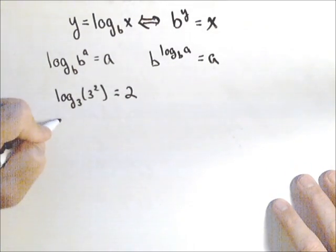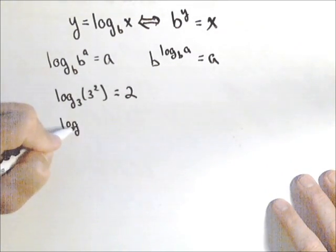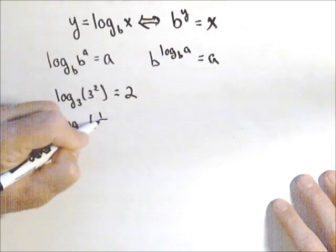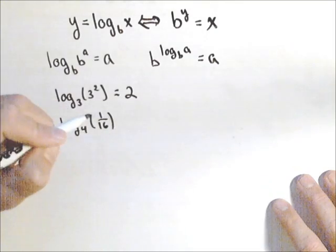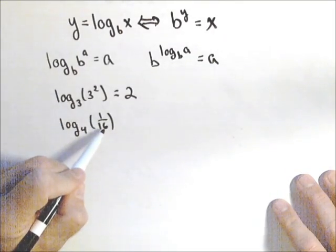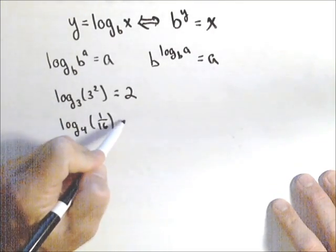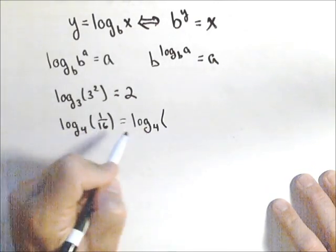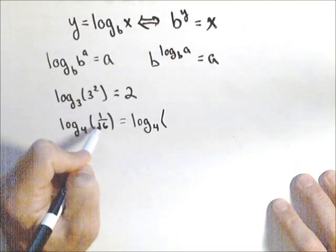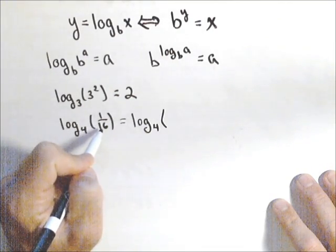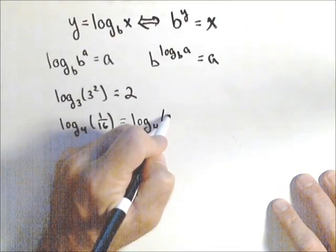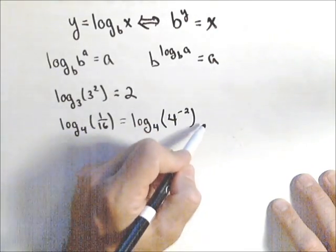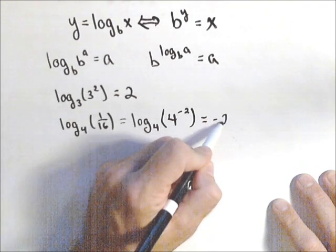We'll do a few more here just to get used to this. So log base four of one over 16. Now we don't have the bases the same, but we can write one sixteenth as a base four. So log base four, one sixteenth, well, 16 is four squared. Because it's in a denominator, we're gonna write it as four to the negative two. So this is equal to negative two.